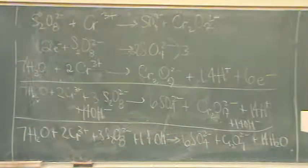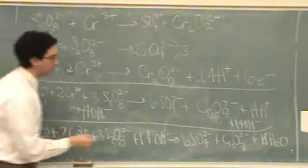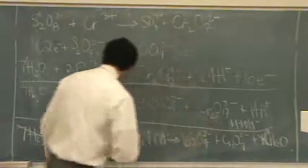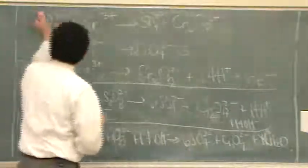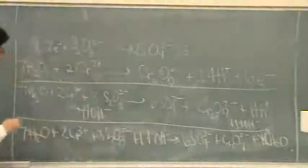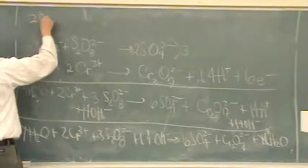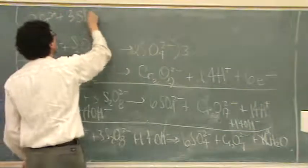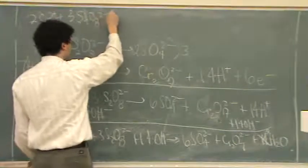Well, the waters are going to simplify a little bit, so you get rid of seven on each side. Okay. So then, if I write my answer at the very top, we'll have two chromium three ions plus three S2O8 two minus.